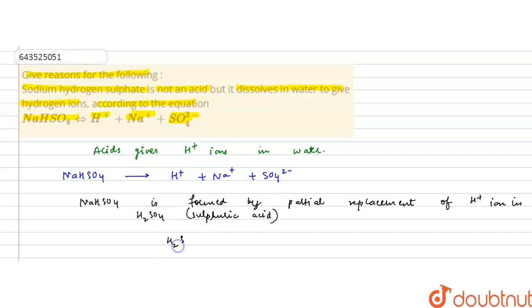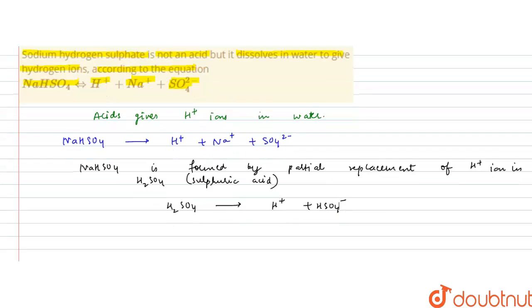Sulfuric acid, when it gives one H plus ion, forms HSO4 minus. This is hydrogen sulfate ion and HSO4 minus, when it reacts with sodium ion, forms NaHSO4, that is sodium hydrogen sulfate.